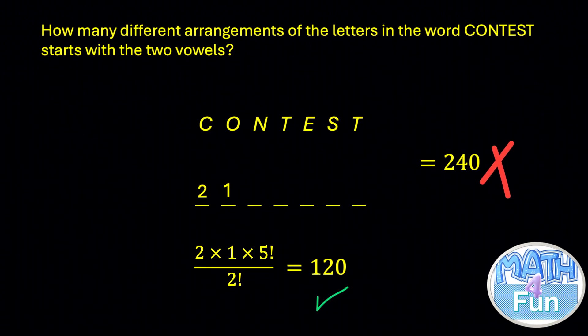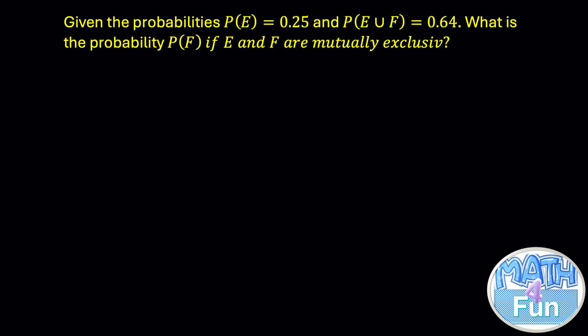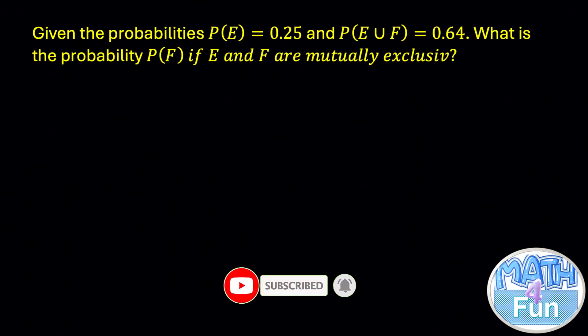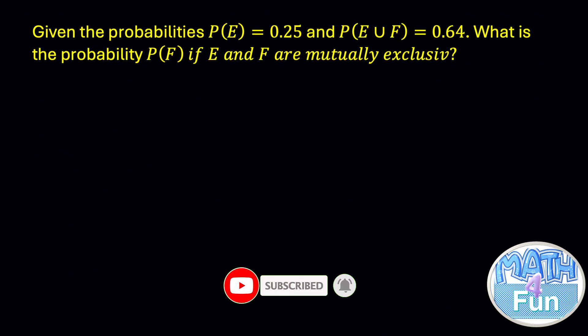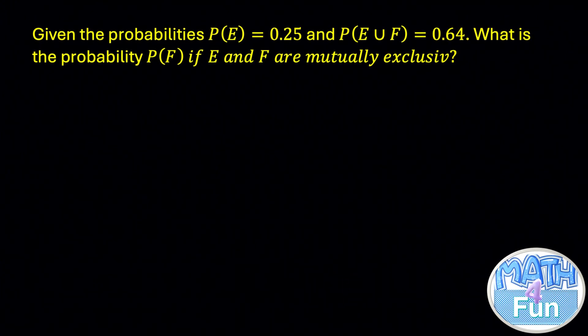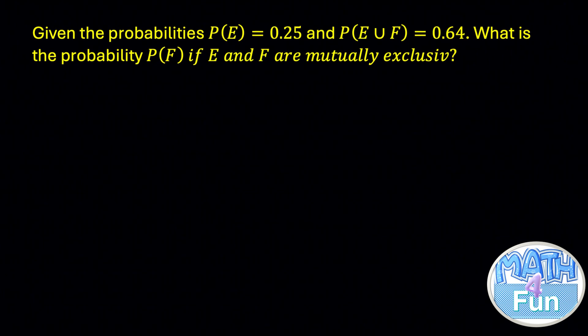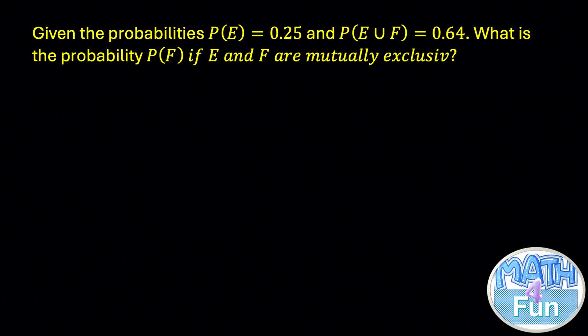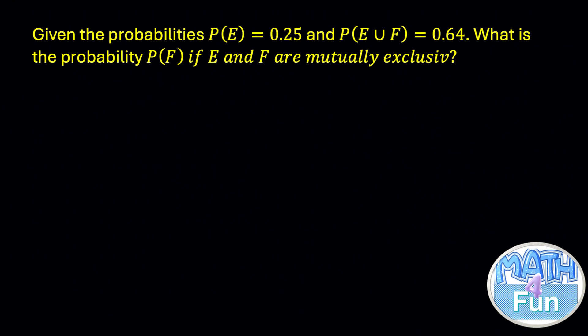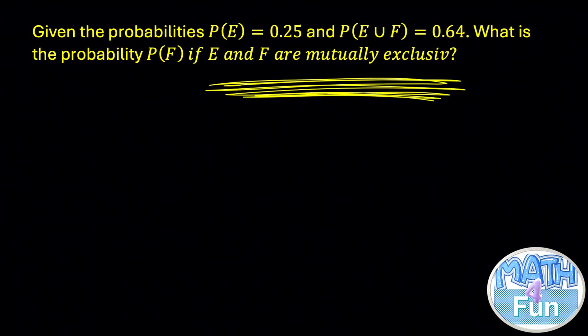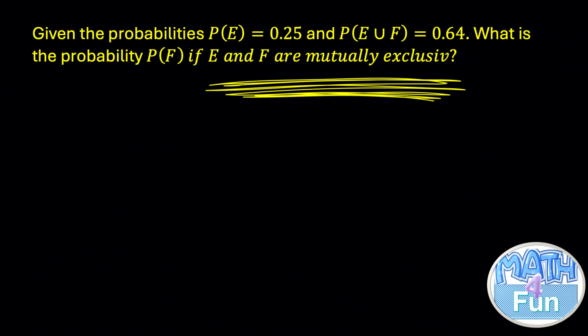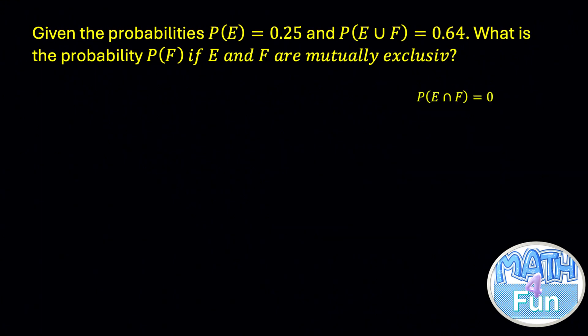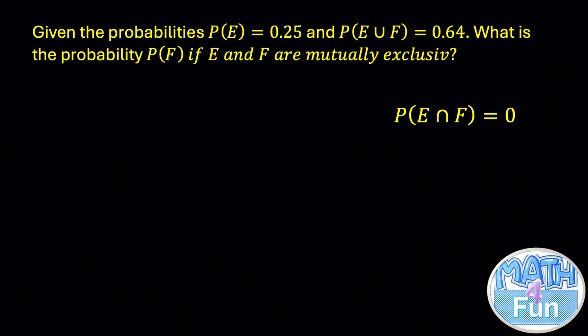Let's look at another example here. Given the probabilities P(E) is equal to 0.25 and P(E union F) is equal to 0.64, what is the probability P(F) if E and F are mutually exclusive? Now if events E and F are mutually exclusive, it means that they cannot occur at the same time. In other words, P(E intersection F) should be equal to 0.